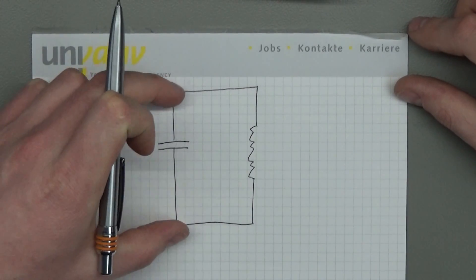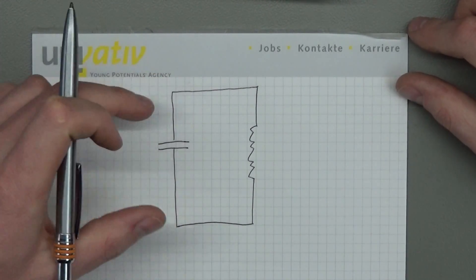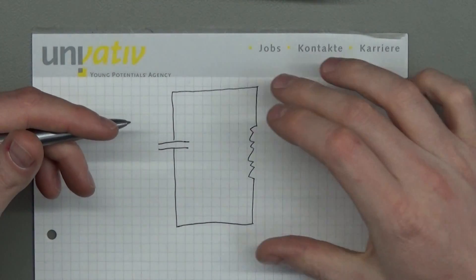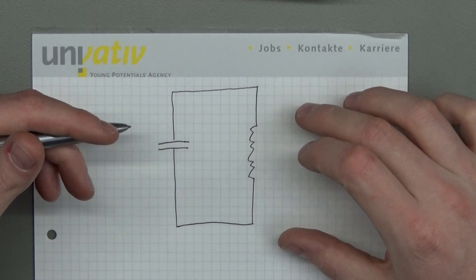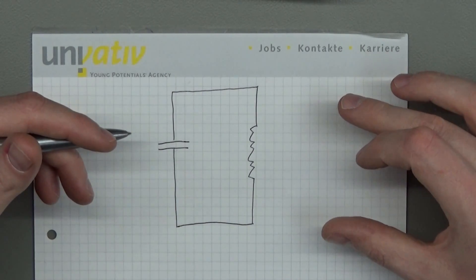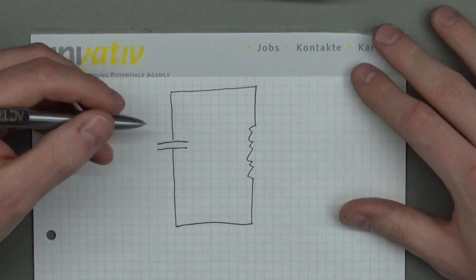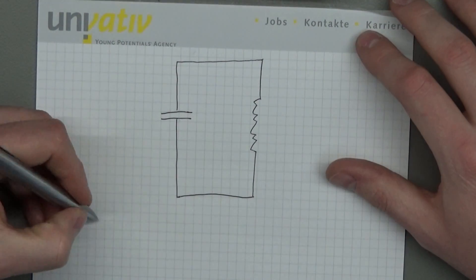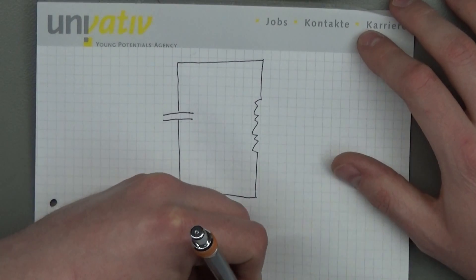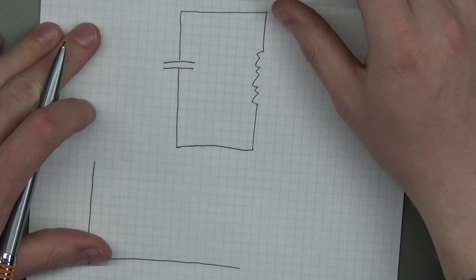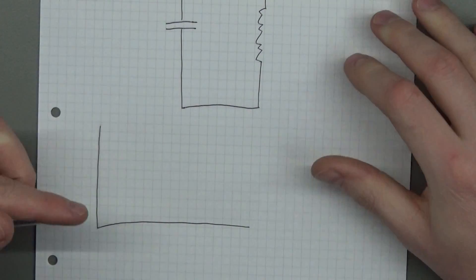Then what happens is basically, if you look at the time voltage diagram, you get something like this. It starts oscillating something like that, and the oscillation frequency here is called resonance frequency.